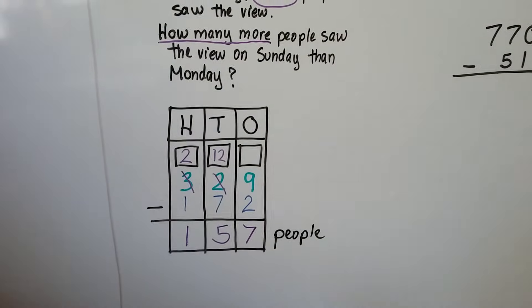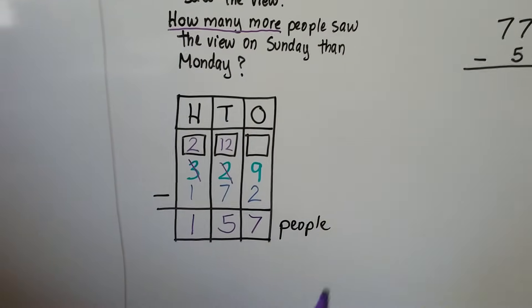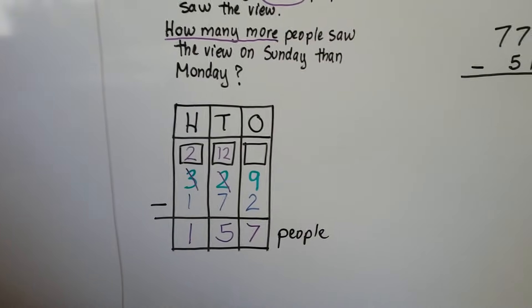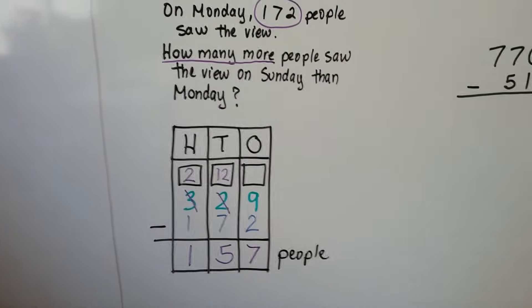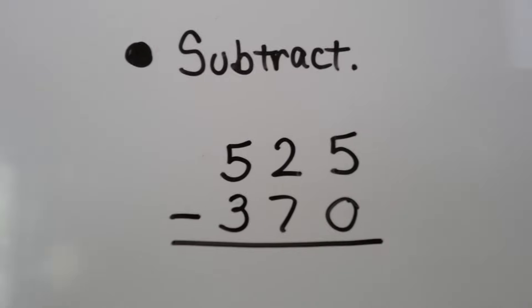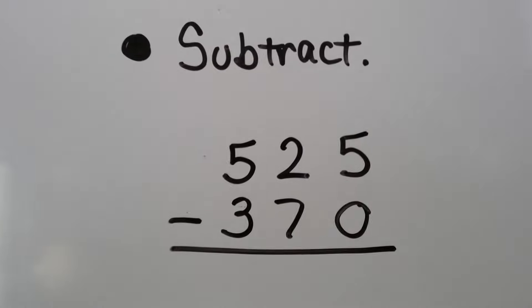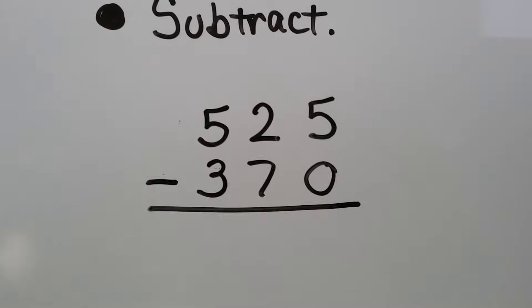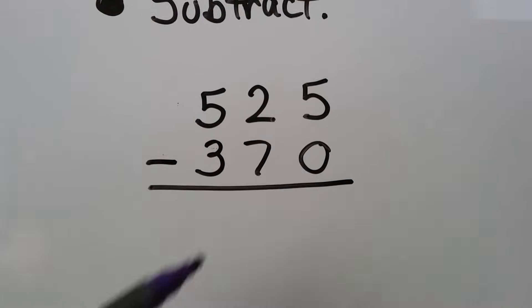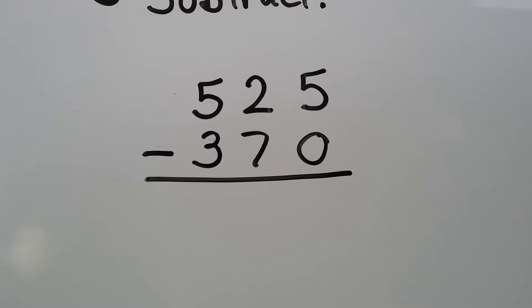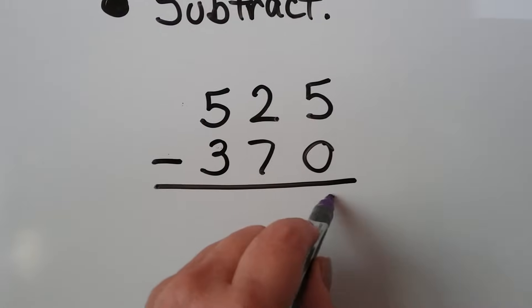It said 'how many more,' so we knew to subtract, and we labeled our answer as 'people' because that's what we're counting. Now let's subtract 525 minus 370. We start at the ones place: 5 take away 0 is easy — that's 5.